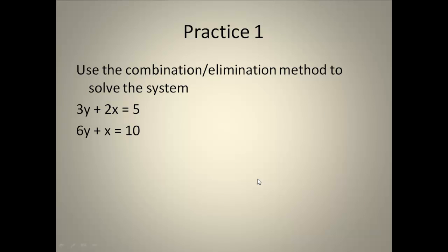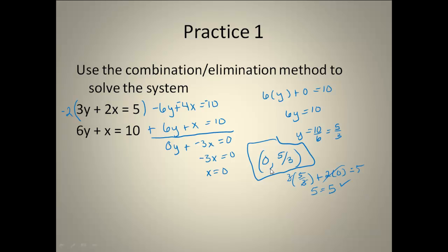Here's your first practice problem. Go ahead, pause the video, and use the combination method to solve this particular system. You should have gotten the point (0, 5/3). The first thing I did was choose to get the y's to be the same — you could have picked the x's. To get the y's to be the same, I had to multiply by negative 2 to get the 3 to be a negative 6. Distributed that out and got negative 6y plus negative 4x equals negative 10. Combined those and ended up with negative 3x equals 0. Dividing both sides by negative 3, I got x equals 0. Then I plugged it back in to get my y, and then I checked it.